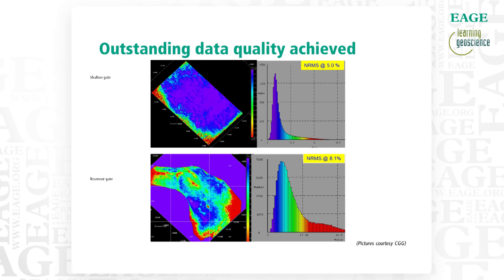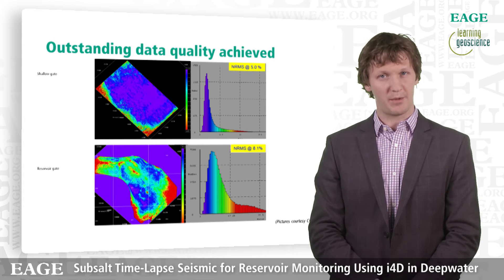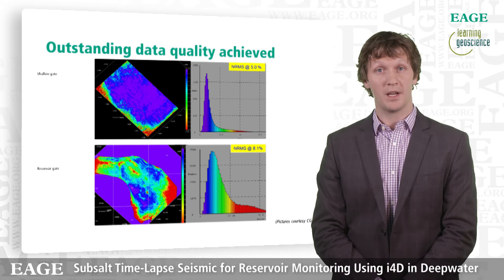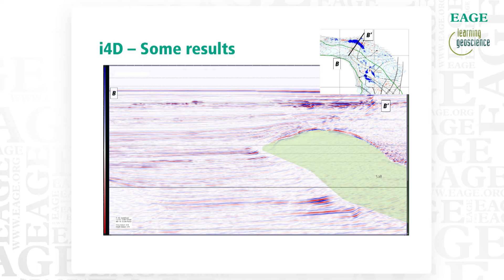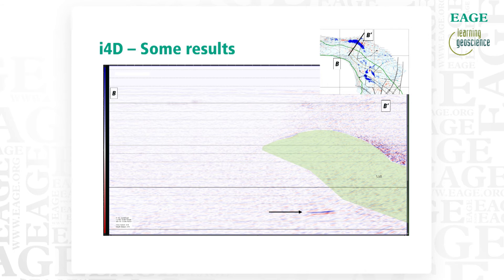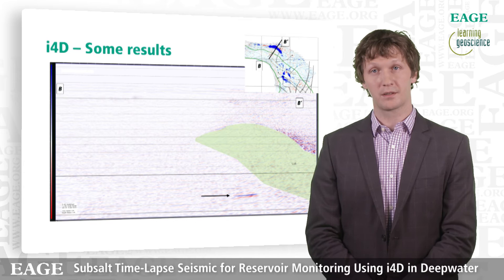Here are images showing the quality we achieved. NRMS values above the reservoir interval in about an 800-millisecond window were about 5%. Keep in mind this is sub-salt with a much smaller node patch and shot box, so a 5% NRMS value is incredibly good. Here's a traverse view of the results in quadrature data of the baseline. The red bodies represent the reservoirs. Looking at the 4D difference, you can see the blue signal overlaying that red sand body, pushing northeast up towards the salt.